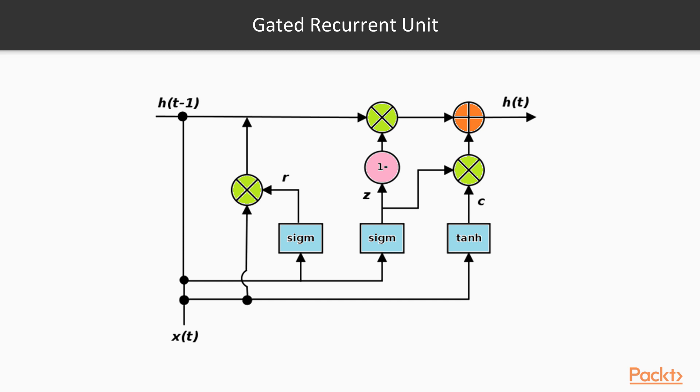Gates are a way to optionally let information through. They are composed of a sigmoid neural net layer and a pointwise multiplication operation. The sigmoid layer outputs numbers between 0 and 1, describing exactly how much of each component should be let through.